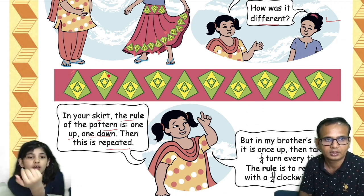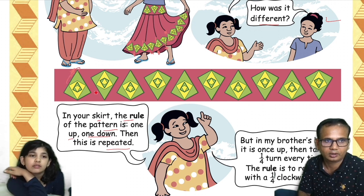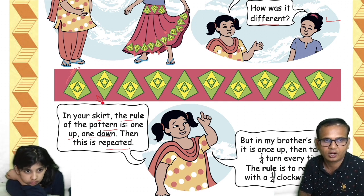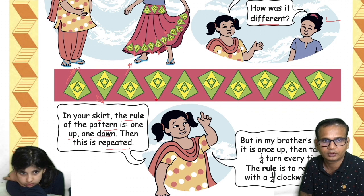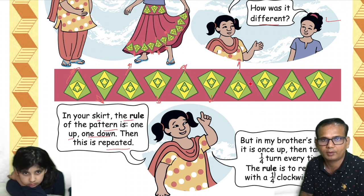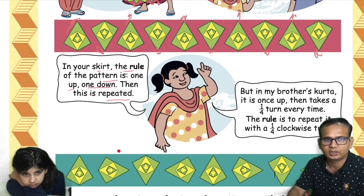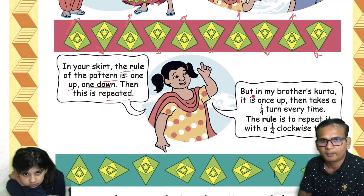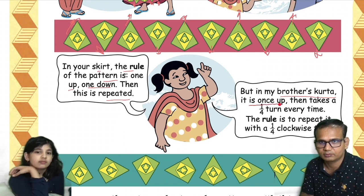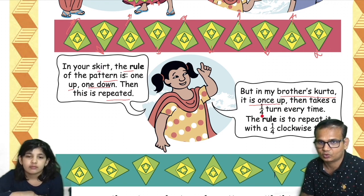Here: one up, one down, one up, one down — yes, this is repeated. But in my brother's kurta, it is once up, then it takes a quarter turn every time.